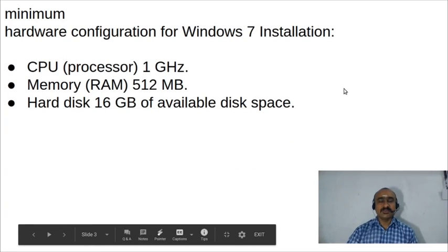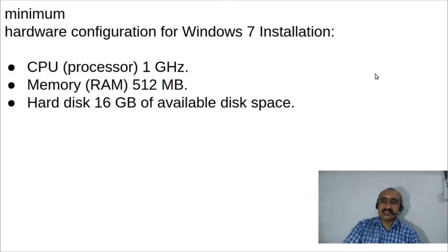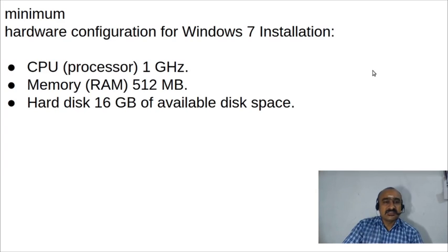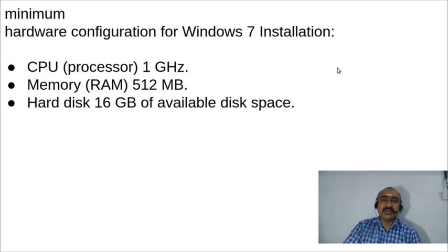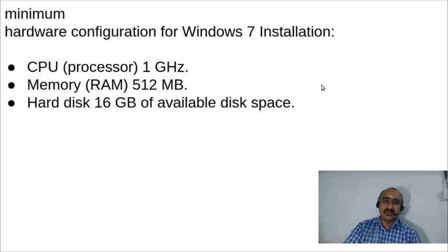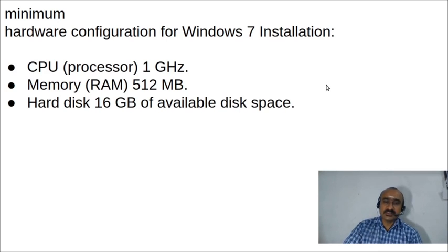First we will discuss the minimum hardware configuration required for installing Windows 7. Starting with the CPU — your processor — the minimum processing speed must be 1 GHz. When buying a new computer or laptop today, the processor speed is typically more than 2 GHz, averaging between 1.8 GHz and 2.4 GHz. So 1 GHz is the minimum required.